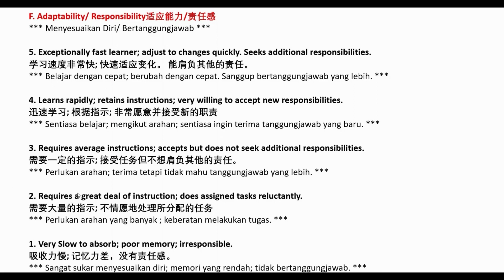Some clients ask: what if an employee has already exceeded score three but not yet reached score four? Simple — just put 3.5. If they've exceeded score four but not reached score five, put 4.5. But don't overcomplicate it with 3.6, 3.7, or 3.8. Keep it simple.